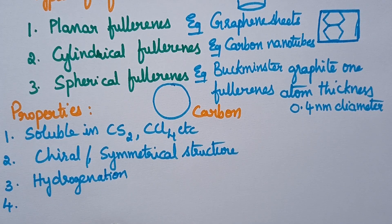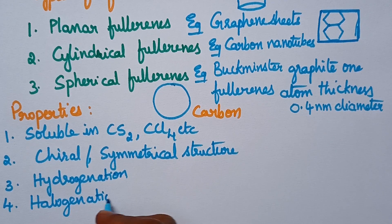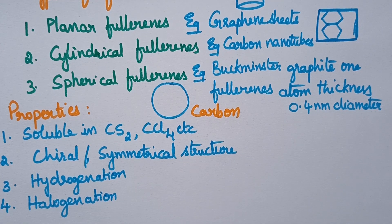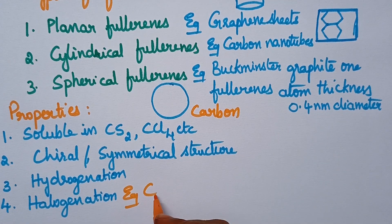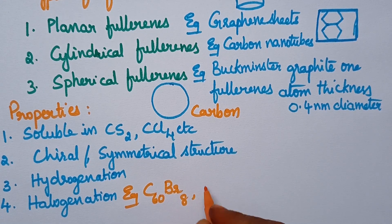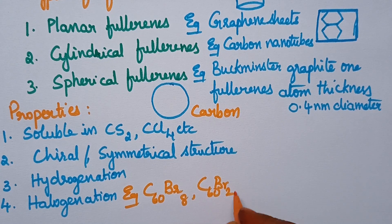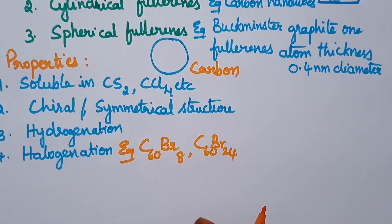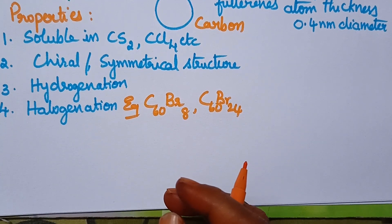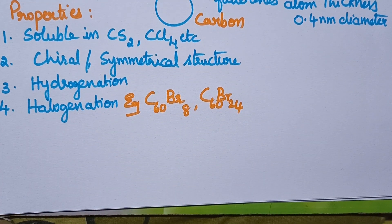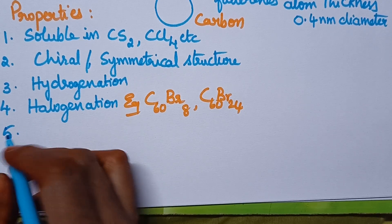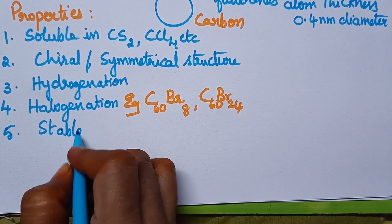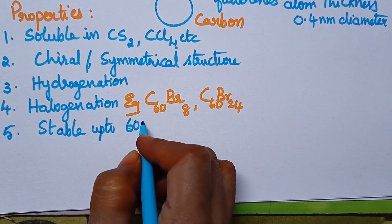At the same time, they undergo halogenation more readily and result in the formation of compounds such as C60Br8, C60Br24, etc. Coming to the stability of these fullerenes, they are highly stable even at very high temperatures — fullerenes are thermally stable up to 600 degrees centigrade.